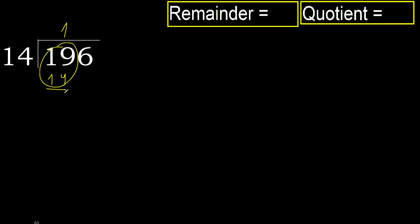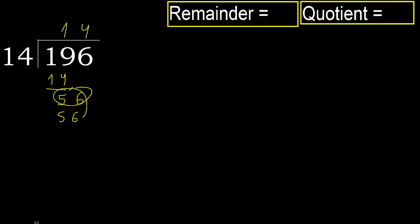Subtract. Next: 56. 14 multiplied by 5 is greater. Multiplied by 4, 56 is not greater. Subtract: 56 minus 56 is 0. Next, there is no number, therefore finish.